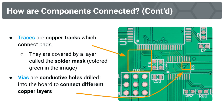So how does current get from one pad to the next? Traces or copper tracks connect these pads. You can see here that underneath this green layer — which we're going to call the solder mask — we actually have these lines which connect the different pads. These lines are those traces.